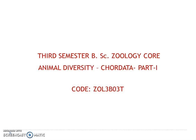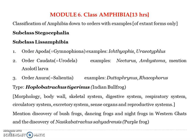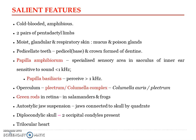Good morning everyone. We are moving on to Module 6, which is the class Amphibia. As per the syllabus, you are supposed to learn the classification up to the orders, the details of the type example Bufo melanostictus, the discovery of some species from the Western Ghats, and the discovery of Nasikabatrachus. We will now look into the salient features of Amphibia.